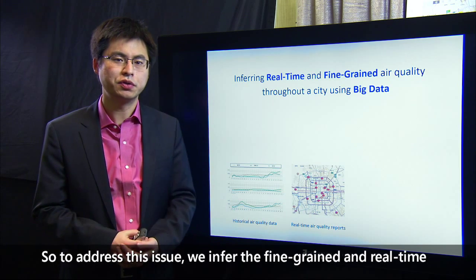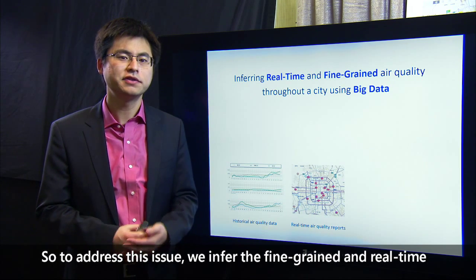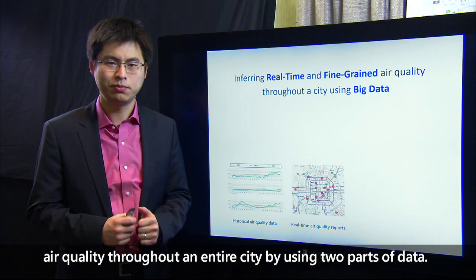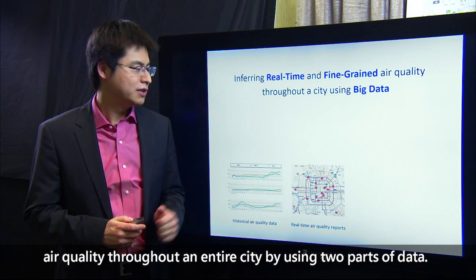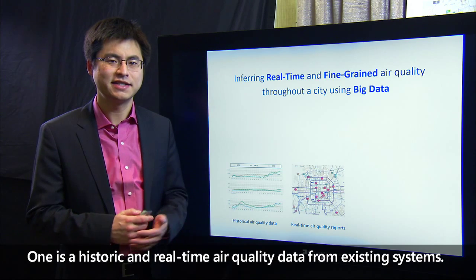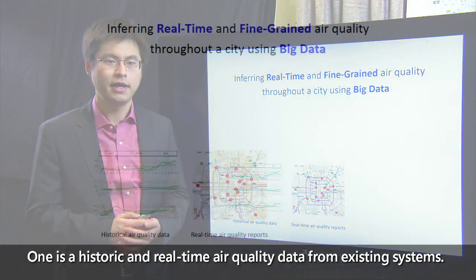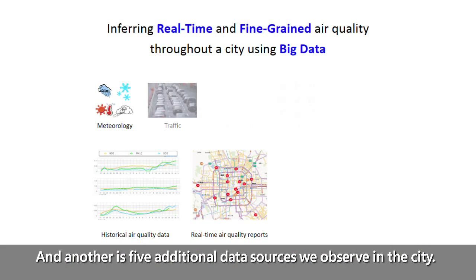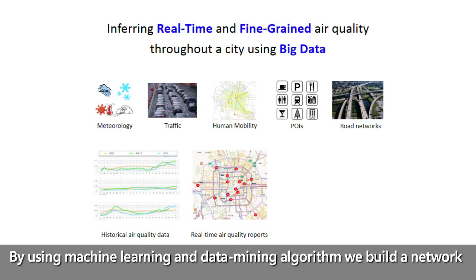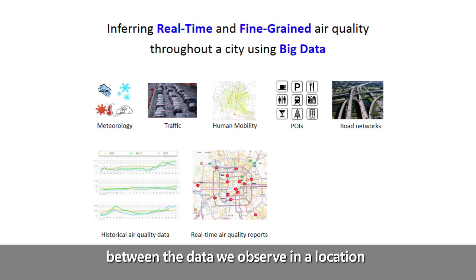To address this issue, we infer the fine-grained, real-time air quality throughout an entire city by using two parts of data: historic and real-time air quality data from existing systems, and five additional data sources we observe in the city. By using machine learning and data mining algorithms, we build a model between the data we observe at a location and the air quality of that location.